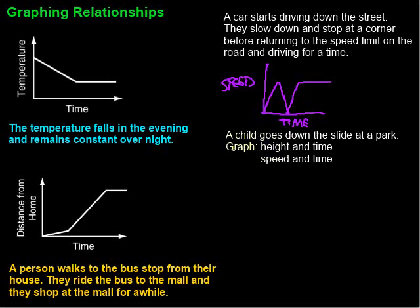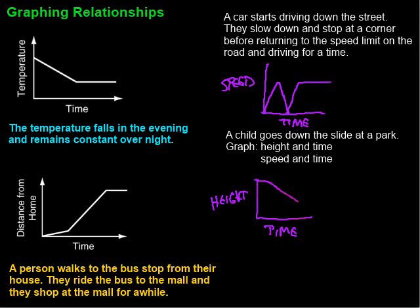Now let's look at the next situation, which asks us to graph two different things for the same scenario. A child goes down a slide at a park. First, let's graph height versus time. The child starts at the top of the slide, so height is high. As time goes by, their height gets lower and lower until they reach the bottom of the slide.